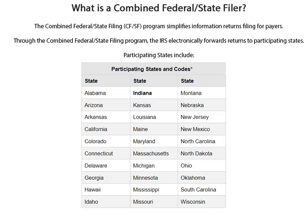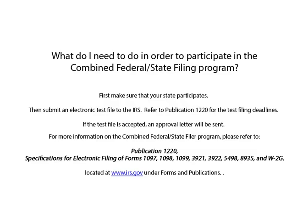What is a Combined Federal State Filer? The Combined Federal State Filing Program simplifies information returns filing for payers. Through the program, the IRS electronically forwards original returns to participating states. To participate, first make sure your state participates in the program, then submit an electronic test file to the IRS. Please refer to Publication 1220 for the test filing deadlines. If the test file is accepted, an approval letter will be sent. For more information, please refer to Publication 1220, which can be found on the IRS website under Forms and Publications.